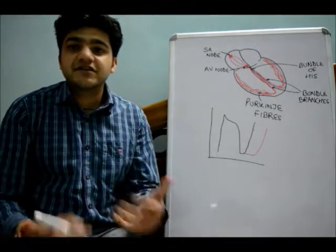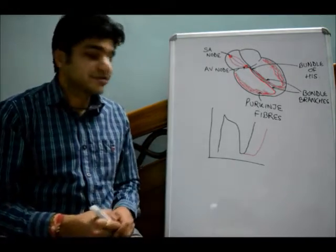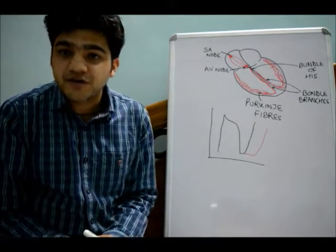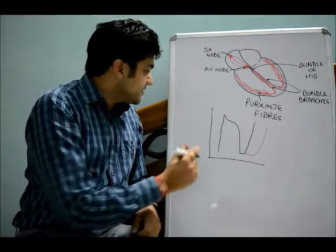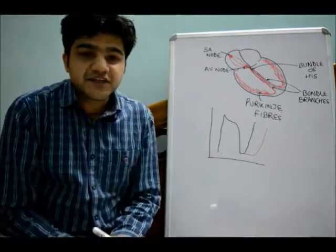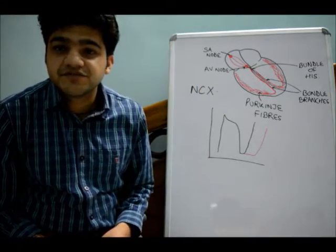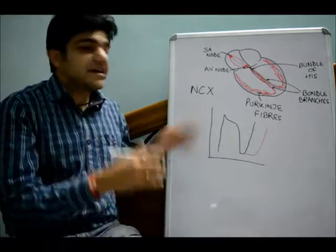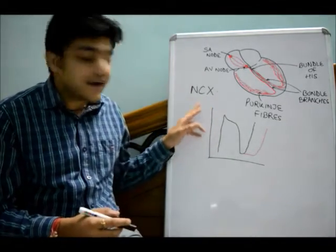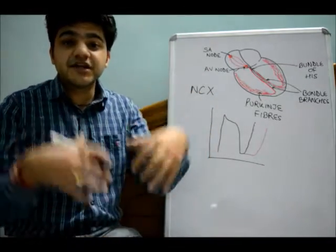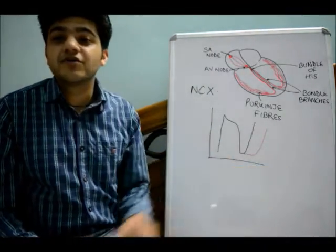DADs are mostly exhibited at a faster cardiac rate. The most important factor responsible for them is calcium overload in the cell or in the sarcoplasmic reticulum. When there is an overload of calcium inside the cell, the NCX channel tries to pump calcium out and bring sodium in. This is electrogenic because it brings three sodium ions inside and pushes two calcium ions outside, resulting in a net positive inward current that may touch the threshold and generate another action potential.